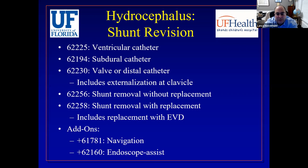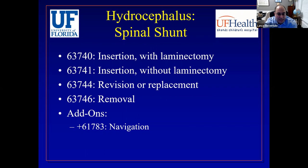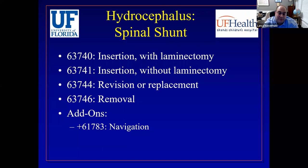62256 is shunt removal without replacement. 62258 is shunt removal with replacement, including replacement with an EVD — so if you're taking out an infected shunt and placing an EVD, use 62258. Navigation and endoscope assist codes can be appended to these if applicable. Spinal shunts are more rare but have their own set of codes: two insertion codes (with or without laminectomy), a revision or replacement code with less specificity, and a removal code. The spinal navigation add-on is a potential add-on if applicable, though obviously rare.